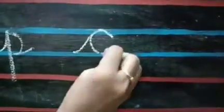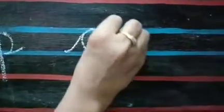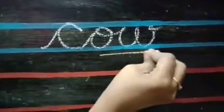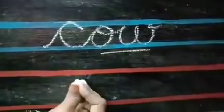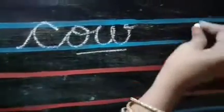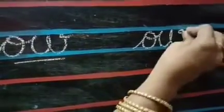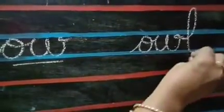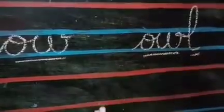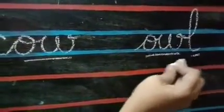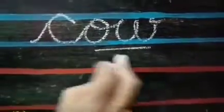Sound of C is k. Sound of O is o. Sound of W is v. O and W is OW. I had already taught you OW. Sound of L is l — owl. You already know the spelling of owl. CA and OW is cow.